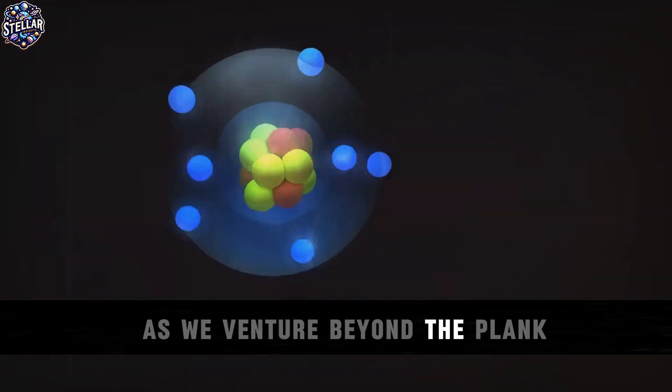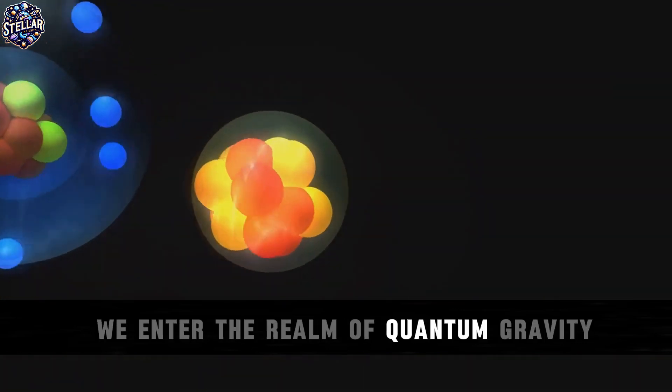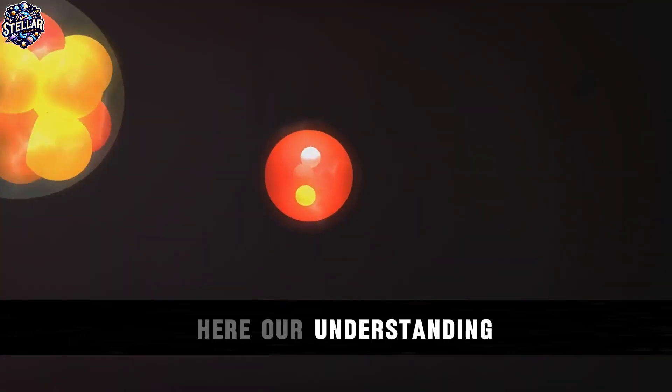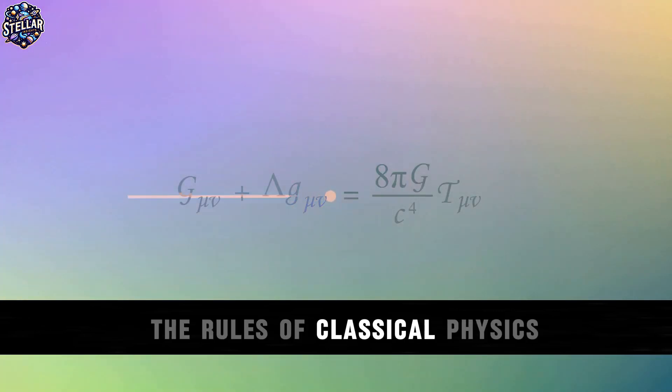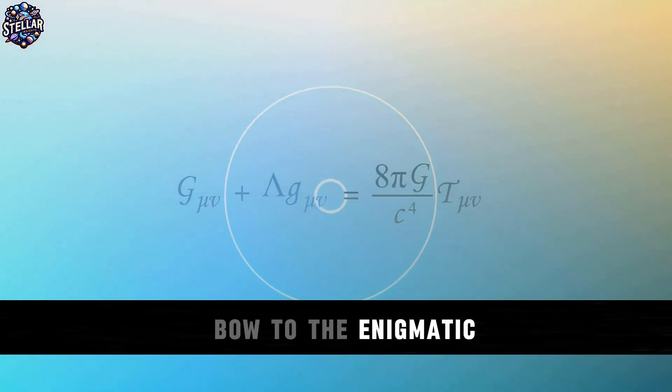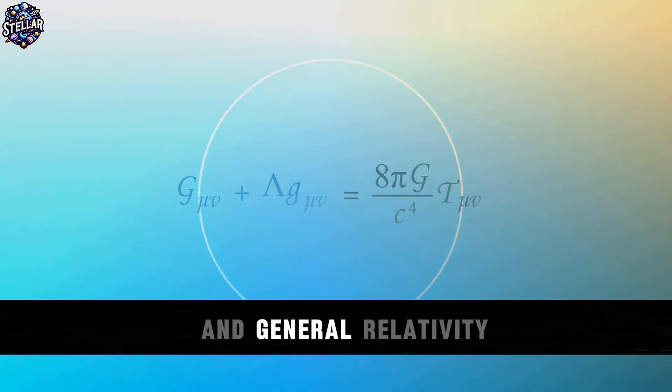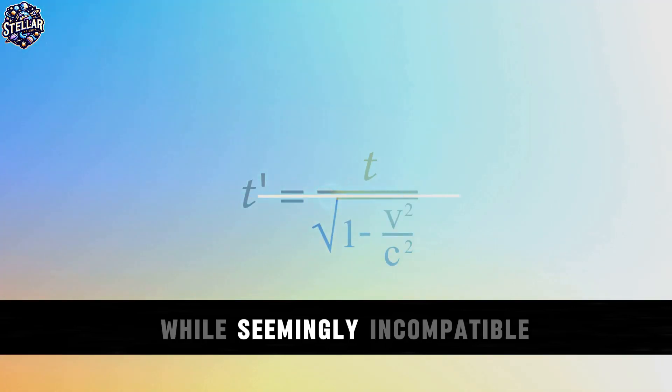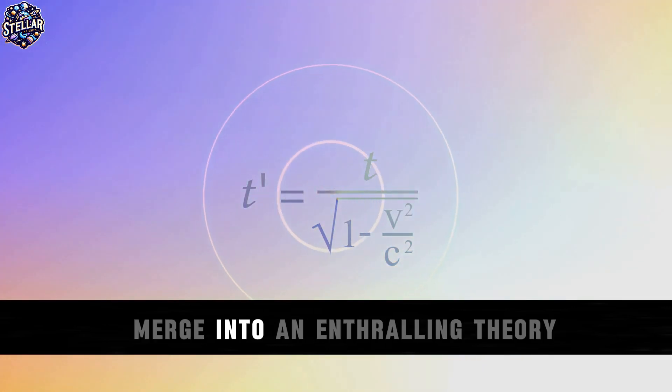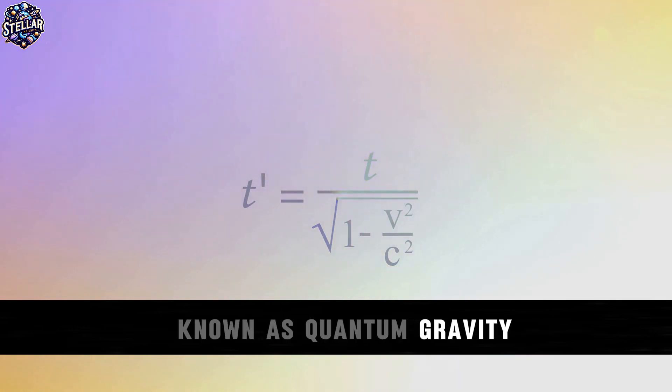As we venture beyond the Planck temperature, we enter the realm of quantum gravity. Here, our understanding of the universe is turned on its head. In this domain, the rules of classical physics bow to the enigmatic principles of quantum mechanics and general relativity. These two pillars of modern physics, while seemingly incompatible, merge into an enthralling theory known as quantum gravity.